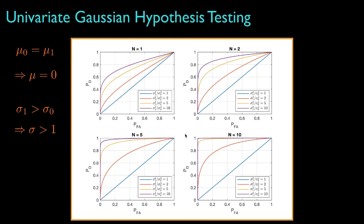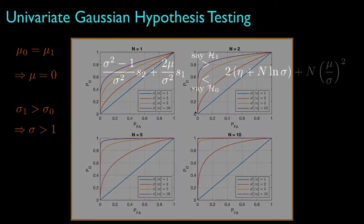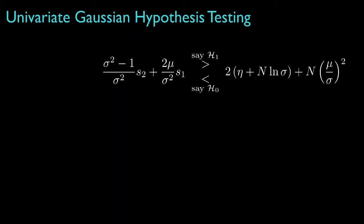Here, for example, are plots where the number of observations are 1, 2, 5, or 10, and the ratio of the variances takes values of 1, 2, 5, and 10 also. Returning to the more general situation when both the means and the variances are unequal, so that mu is not equal to 0 and sigma is not equal to 1.